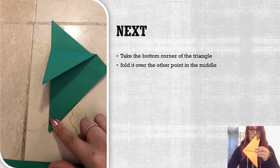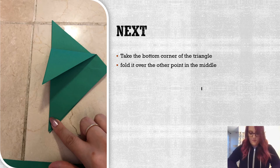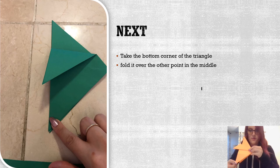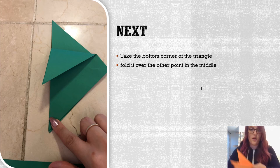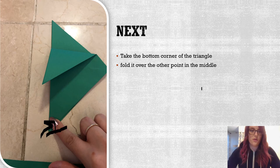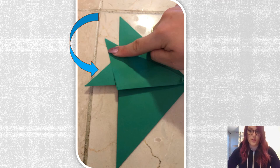Next, take the bottom corner of the triangle. We're going to do the same thing — take the bottom corner and fold it to the top. It should look something like that. On the slide, where my finger is, take this bottom portion and fold it all the way over onto the top. That shows you what it should look like after you've folded both flaps.